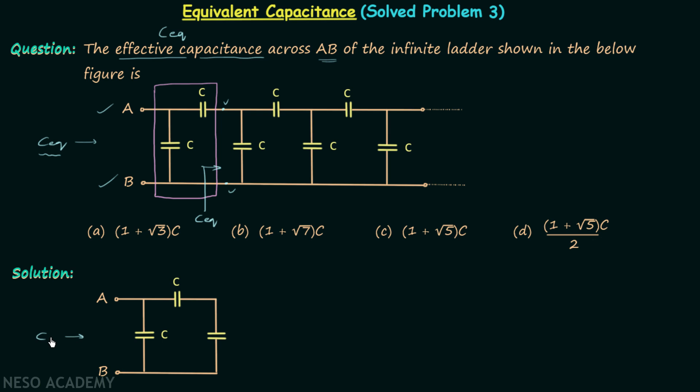C_eq, then we have one capacitor having capacitance C, then another capacitor having capacitance C, and then we have one capacitor having capacitance C. Now upon solving it, we can see that this capacitor and this capacitor are in series.